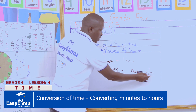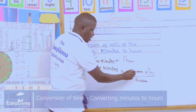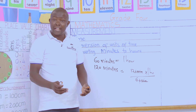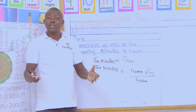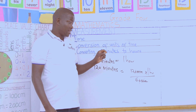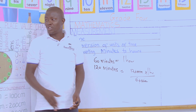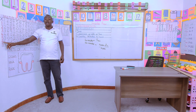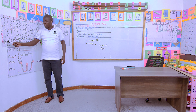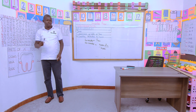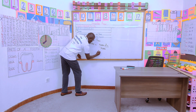Minutes divide by minutes, we remain with hours. We can cancel the zeros: we remain with 12 divided by 6. Remember, multiplication and division are related. What do I multiply by 6 to get 12? From the multiplication table of 6: 6 multiplied by 2 is 12. So 12 divided by 6 is 2 — we get 2 hours.